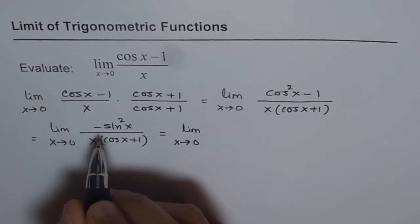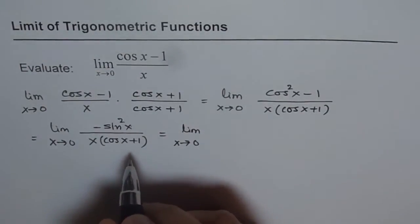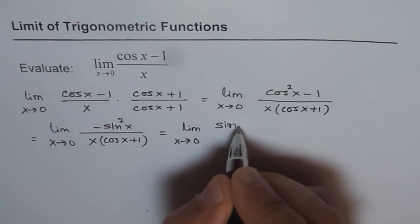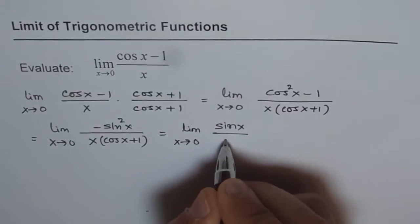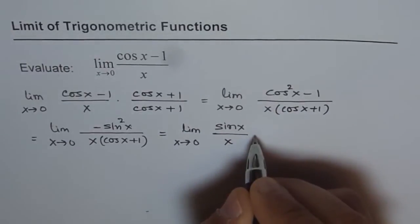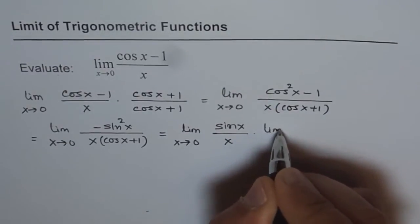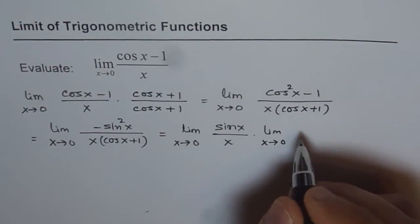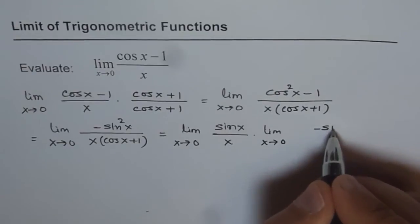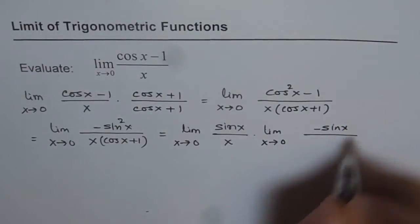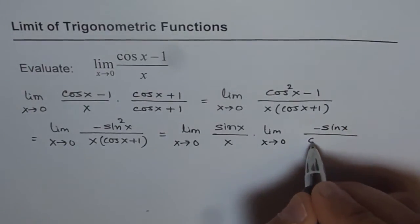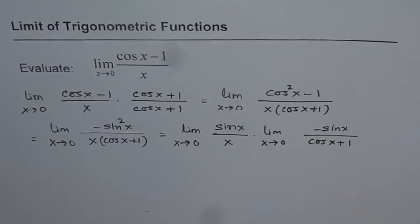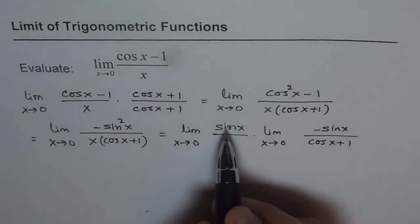It's better to write this in two parts. We can write one part as limit of sine x over x, which we know is 1, and write sin x over x. The other part is the limit x approaches 0 of minus sine x over cos x plus 1.